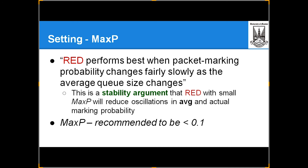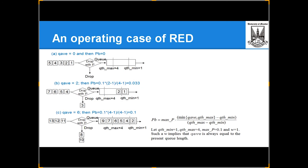These are the standard recommended RED settings. In the example, maximum queue = 4, minimum = 1. Drop probability p = 0 initially, so probability is also 0. We will continue with this from the next session.